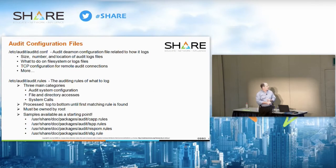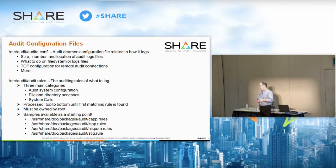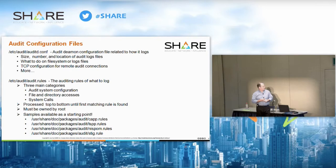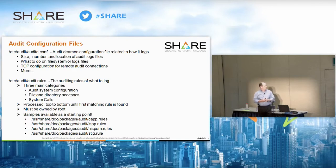For file and directory access rules: if you want to audit a file, the file has to exist and you can't use wildcards. When it comes to directories, auditing a directory is not going to audit all the files within it — what it audits is any metadata changes to the directory. Rules are processed from top to bottom until a match is found and must be owned by root. If you're just getting started, the rules file is typically empty initially, but there are usually at least four sample rules files to pick from — such as STIG rules and CAP rules — with a lot of overlap. It's a good place to start and something to build on.